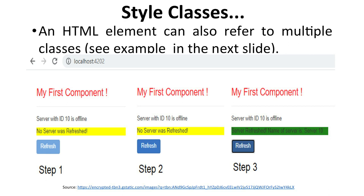An HTML element can also refer to multiple classes. For example, a server component can have states like offline or refreshed. We can have multiple examples — step one, step two, step three — and differentiate them. So an HTML element can refer to multiple classes simultaneously.